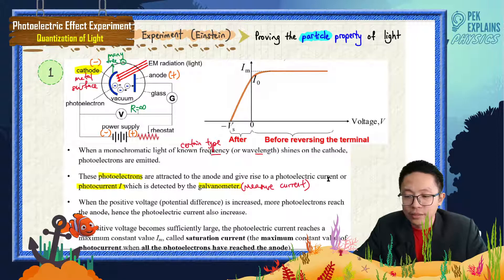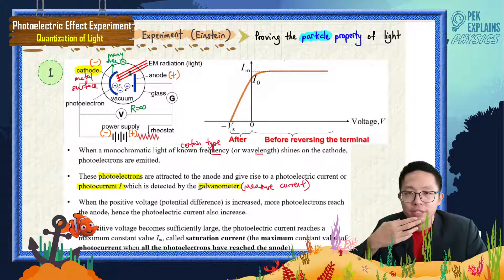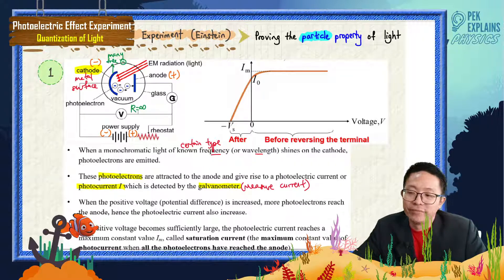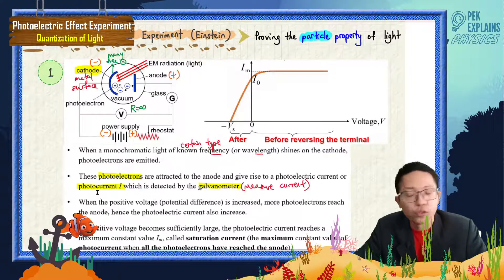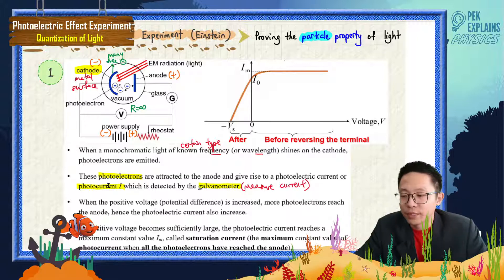This photocurrent only exists if there are photoelectrons being ejected. If no photoelectron is ejected — maybe the radiation does not have enough energy to eject electrons — there will be no current. This is a special current; we call it photocurrent because the photoelectrons are responsible for making it flow through the open circuit.